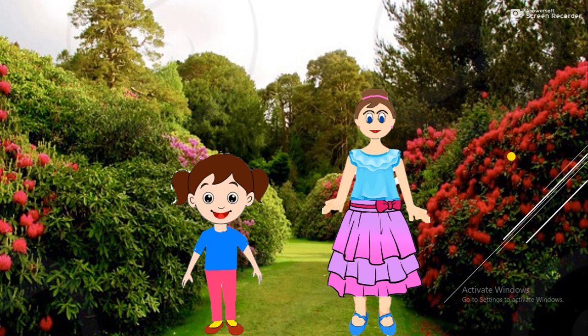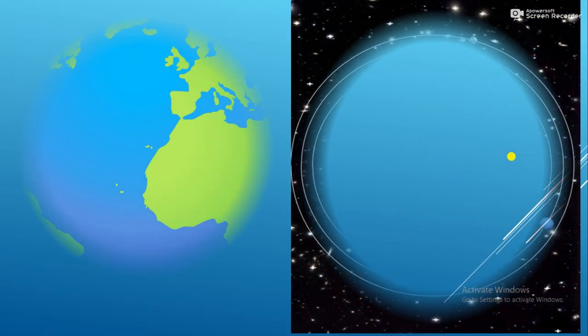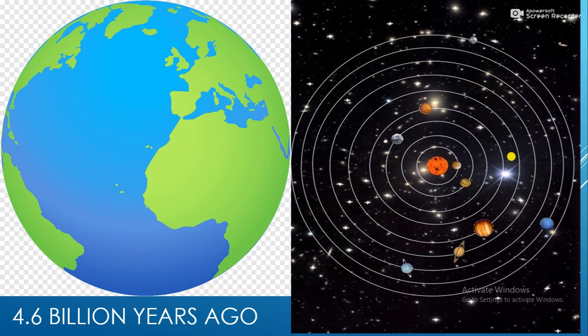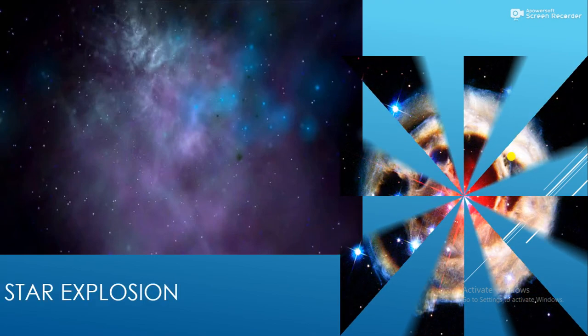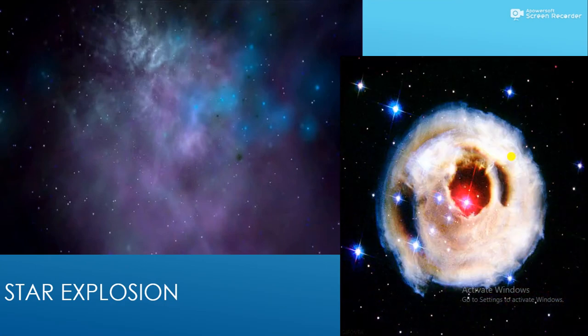But how was Earth formed? We know that Earth and the rest of our solar system formed together about 4.6 billion years ago from a huge cloud of gas and dust following a gigantic star explosion.